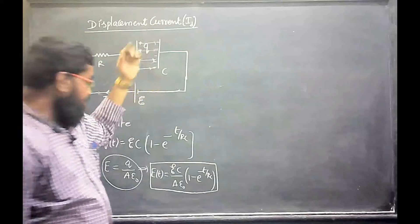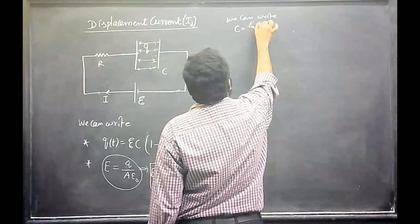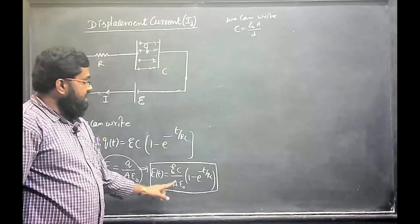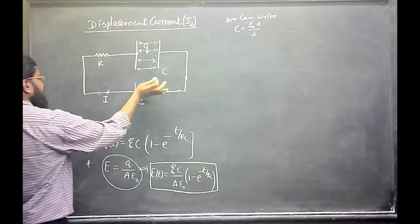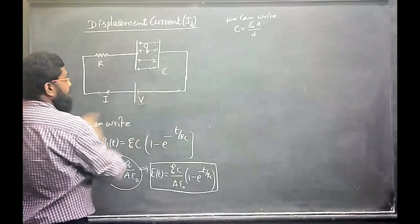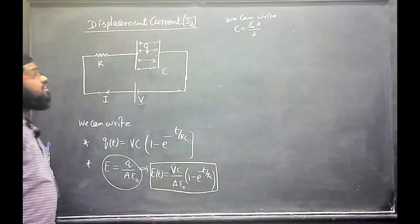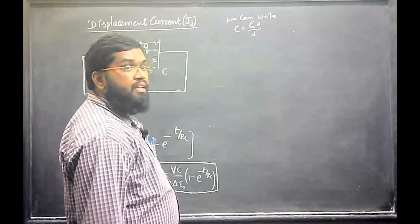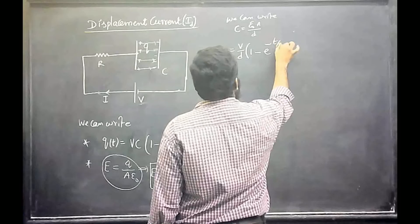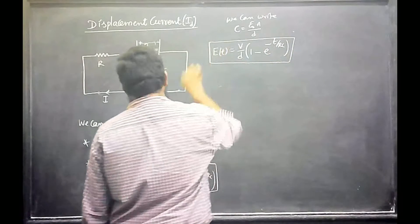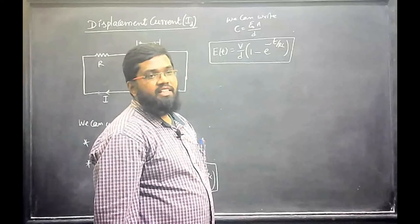Recall the capacitor formula C = epsilon_naught * A / d. Substituting this in, the EC term and epsilon_naught * A cancel, leaving only d. We can write potential V such that EC = epsilon_naught * A / d * V. So the electric field as a function of time becomes E = (V/d) * (1 - e^(-t/RC)). The electric field is changing with respect to time.